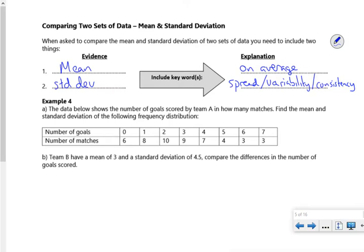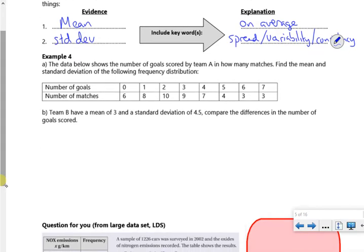If the data is more consistent or less consistent. So it says that the data below shows the number of goals scored in team A, find the mean and the standard deviation. Right then, let's have a look. Give me a second. You're going to put list one, the number of goals in, list two, the number of matches in. So I'll pause it while you put it in the calculator.